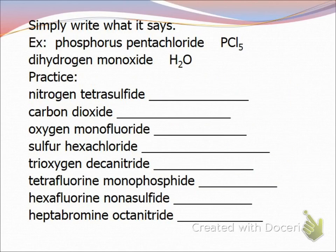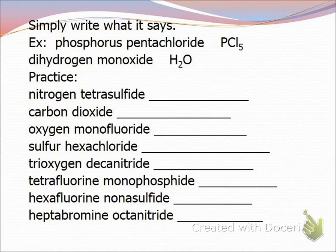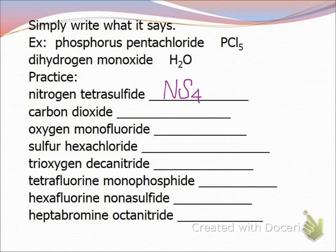When we are writing formulas from the name we are simply going to write what it says. In this case we have phosphorus pentachloride — phosphorus is P and we have 5 chlorides so we put the 5 behind it. Water is actually called dihydrogen monoxide; we normally don't call it that but its formal name would be dihydrogen monoxide. So let's do a couple: nitrogen tetrasulfide — nitrogen is N and then sulfur for sulfide, tetra means 4, so we would have NS4.